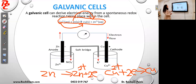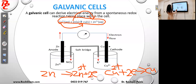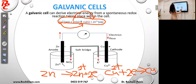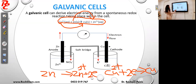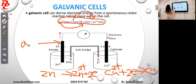We now have two half cells: in one half cell reduction happens, in the other oxidation happens. In the zinc 2+/zinc half cell you have a zinc 2+ solution and a zinc electrode. In the copper 2+/copper half cell you have a copper 2+ solution and a copper electrode. The electrode where oxidation happens is called the anode, so because zinc is undergoing oxidation, the zinc electrode is the anode.